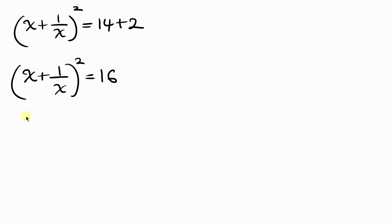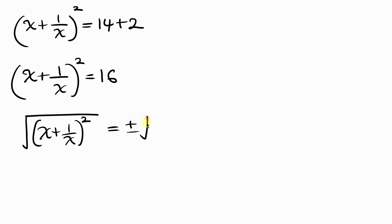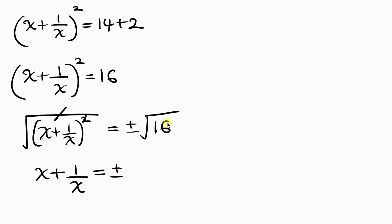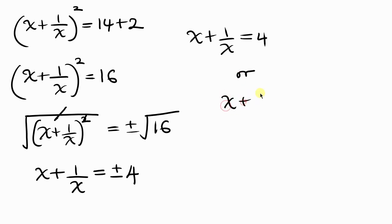Taking the square root of both sides to remove the square: x plus 1 over x, all raised to the power of 2, equals plus or minus the square root of 16. The square root cancels the square, leaving x plus 1 over x equals plus or minus 4. So the two values are x plus 1 over x equals positive 4, or x plus 1 over x equals negative 4.